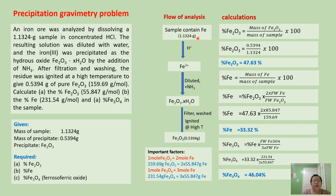After digestion, all of the ions in the sample are converted into ferric ions. Then we precipitated these ferric ions as ferric oxide by adding ammonia solution. Then we filtered, washed, and ignited our precipitate. The end product here is the ferric oxide, which is equal to 0.5394 grams.